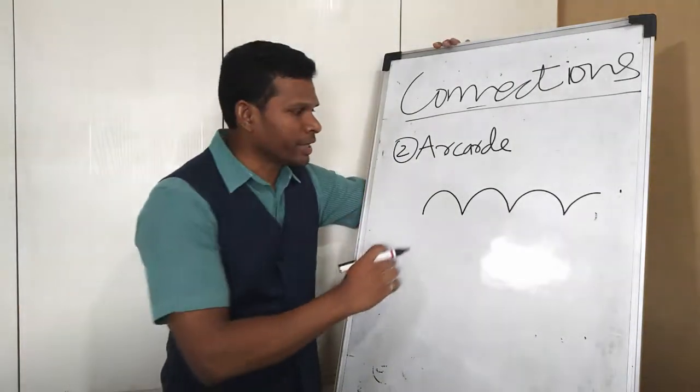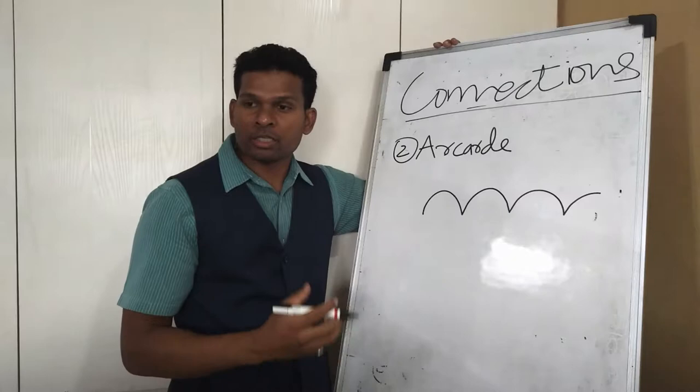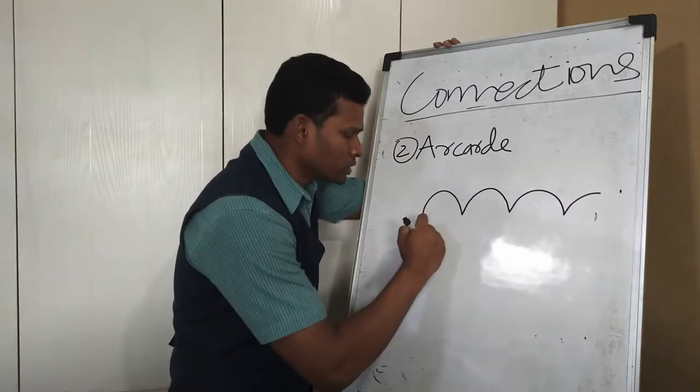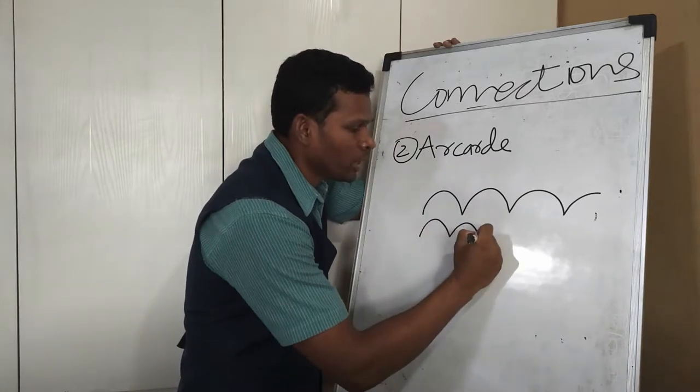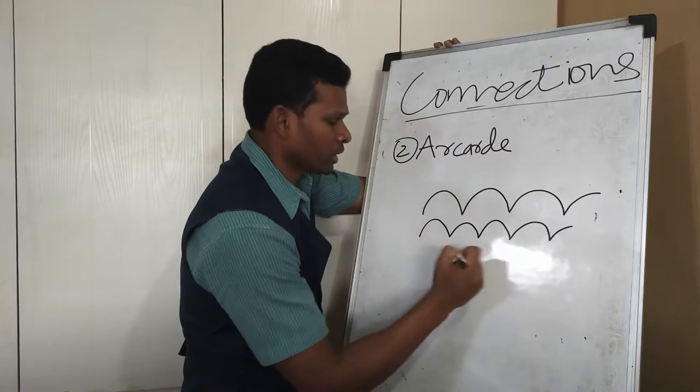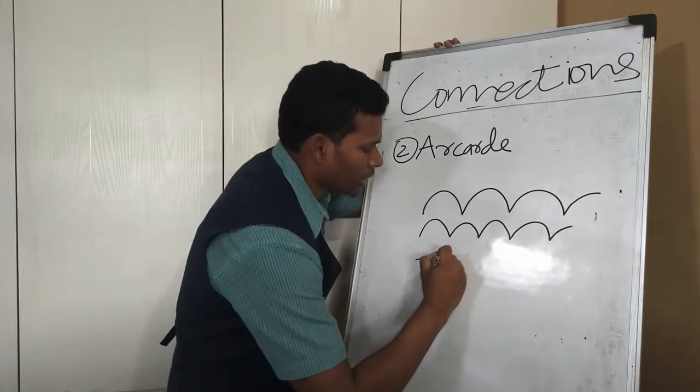Now, what does arcades indicate? Arcades indicates that this person has a lot of control. To do this kind of action, you will have to have a lot of control. These connections can be observed in handwriting like this. These are arcades.